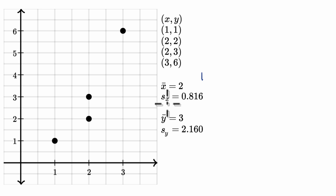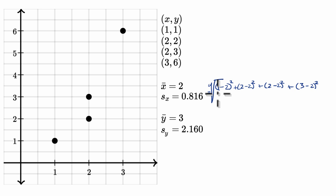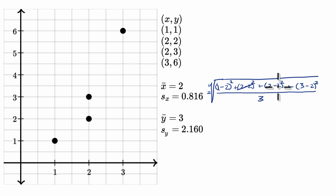The sample standard deviation for x — we've seen this before, this should be a little bit of review. It's going to be the square root of the distance from each of these points to the sample mean squared: one minus two squared, plus two minus two squared, plus two minus two squared, plus three minus two squared, all over three — since we have four data points, we divide by n minus one, which is three. This simplifies nicely: you get the square root of two thirds, which is approximately 0.816.